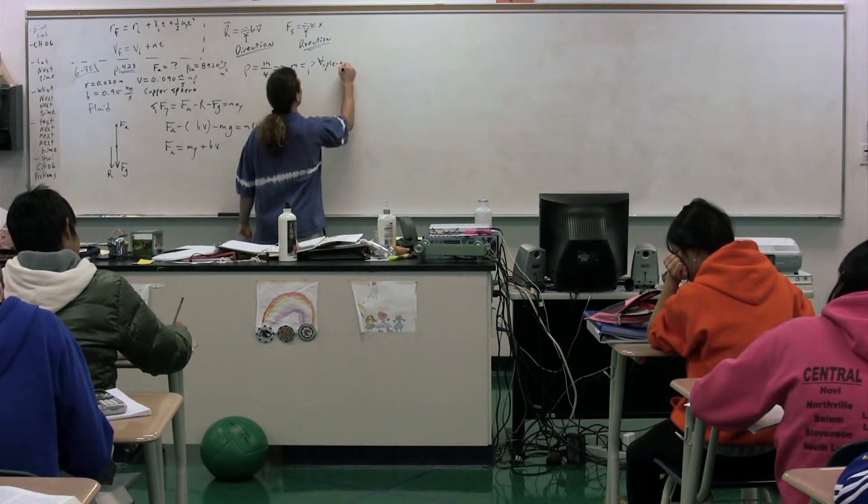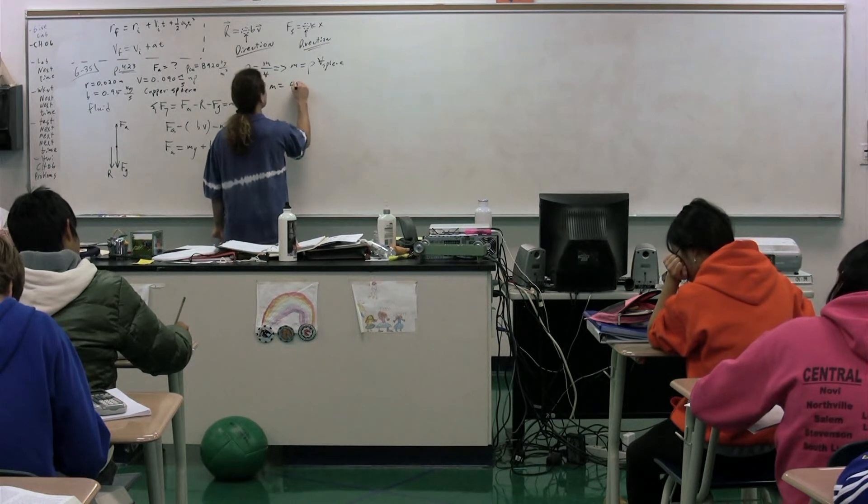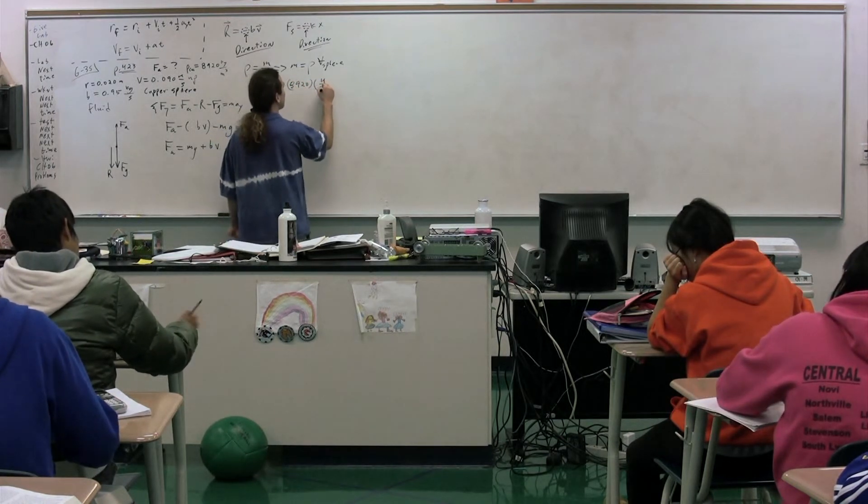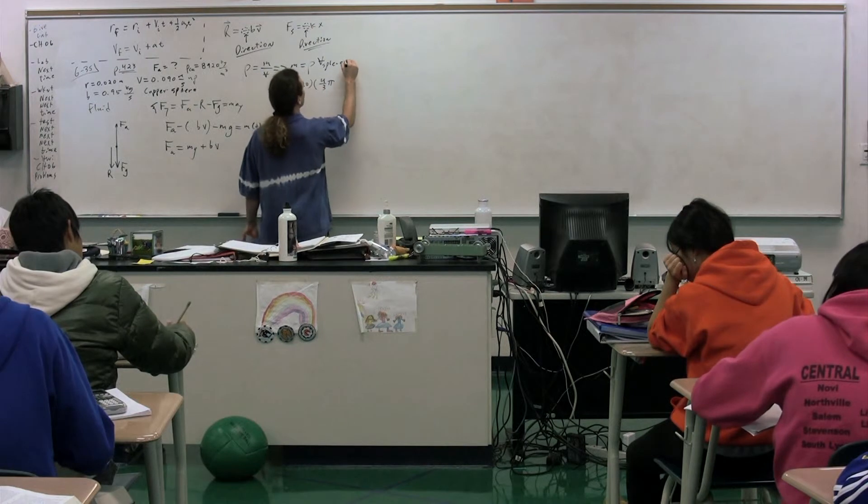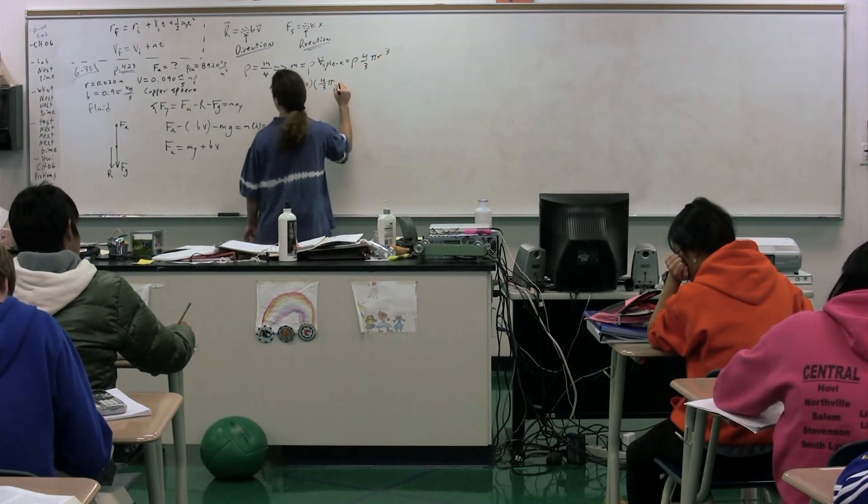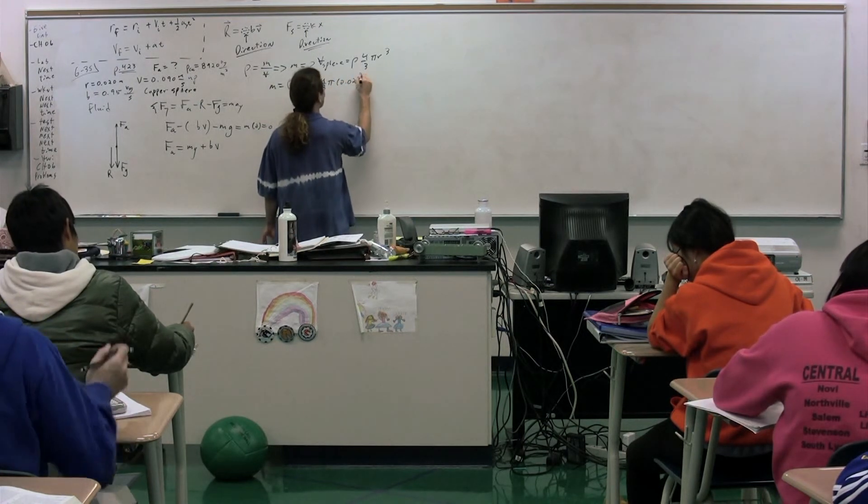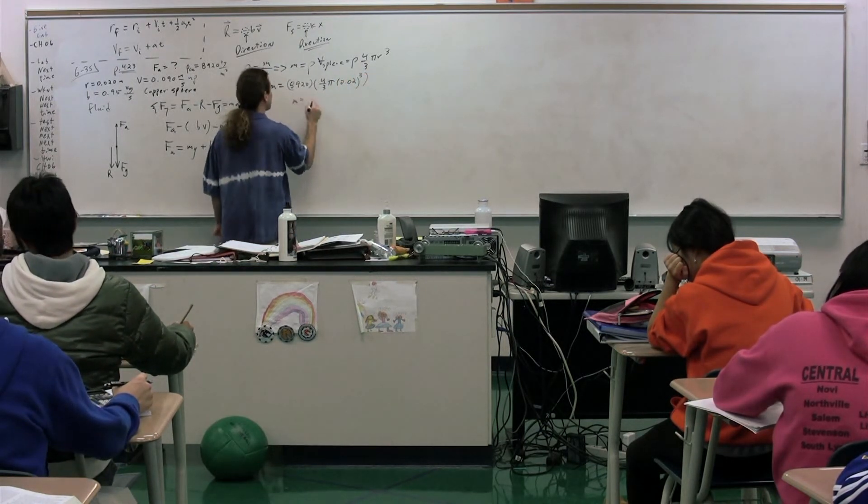So in this particular case, it's the volume of a sphere. So the mass is going to be equal to the density, 8,920 multiplied by the volume of a sphere, 4 thirds pi r cubed. We have the radius. It is 0.02 that cubed. What, then, is the mass, please?